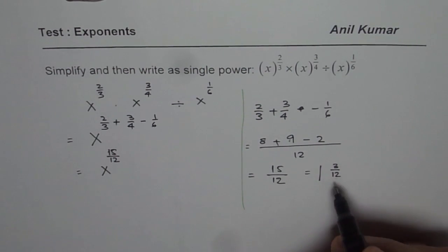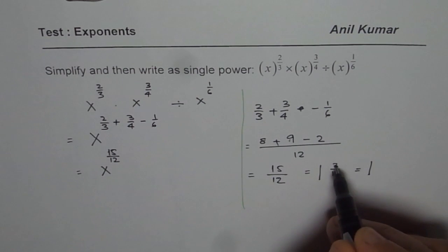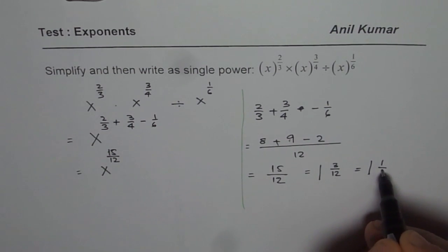And then you get 3 over 12. But 3 over 12 can be simplified, and you can write this as one whole and 1 over 4.